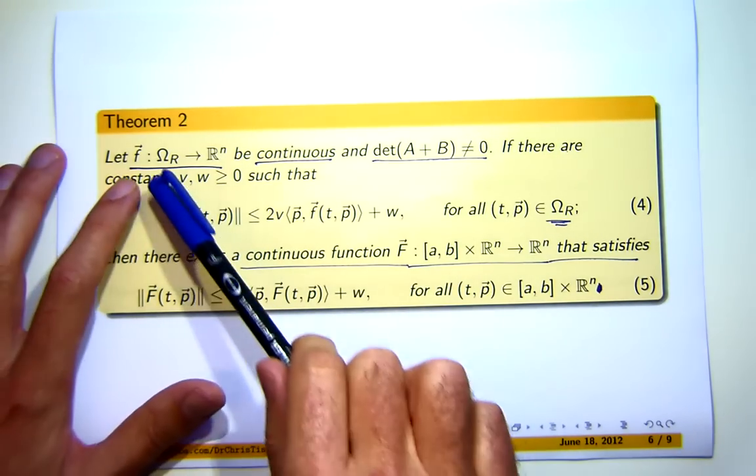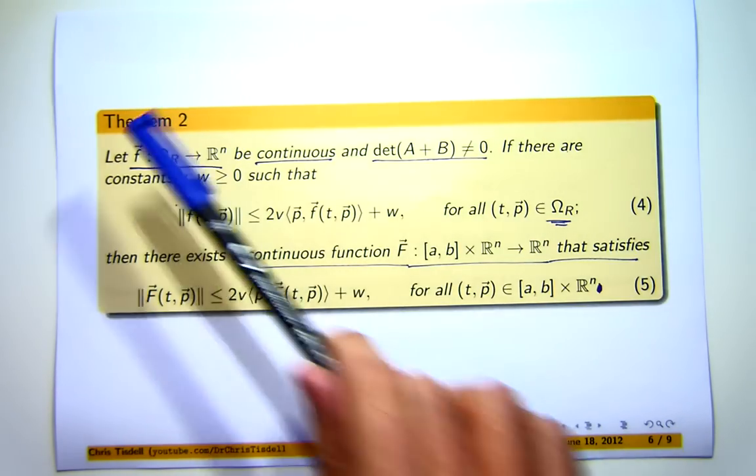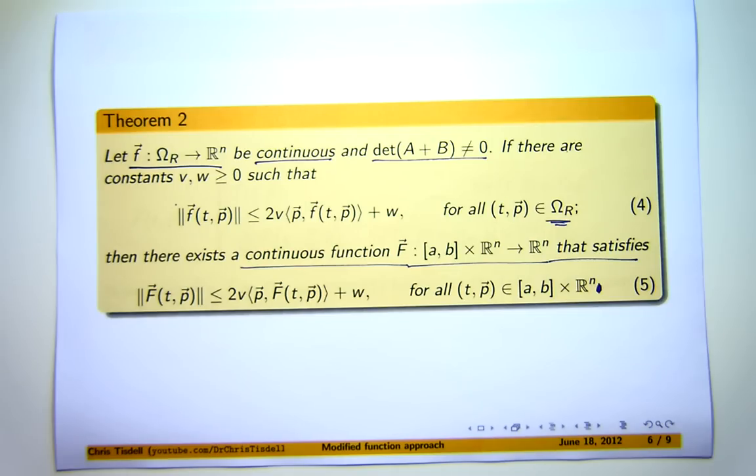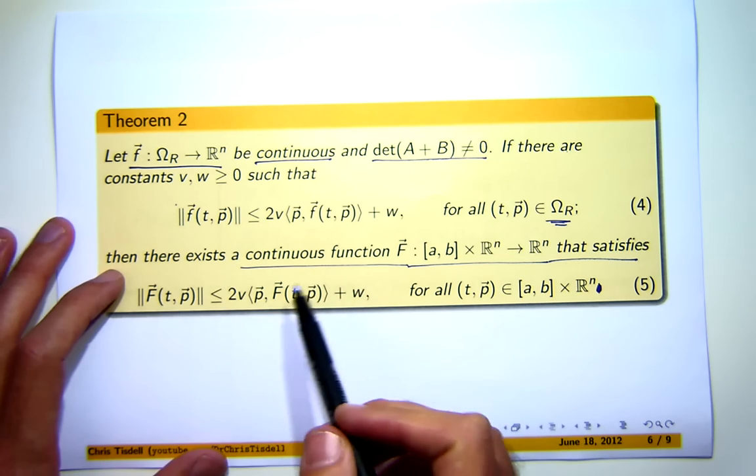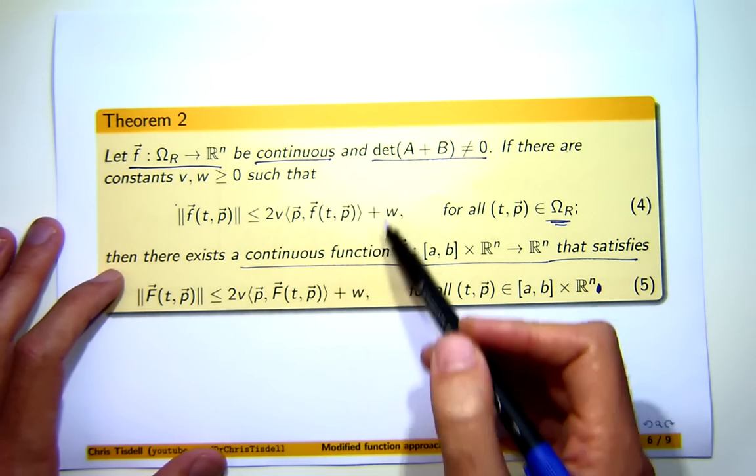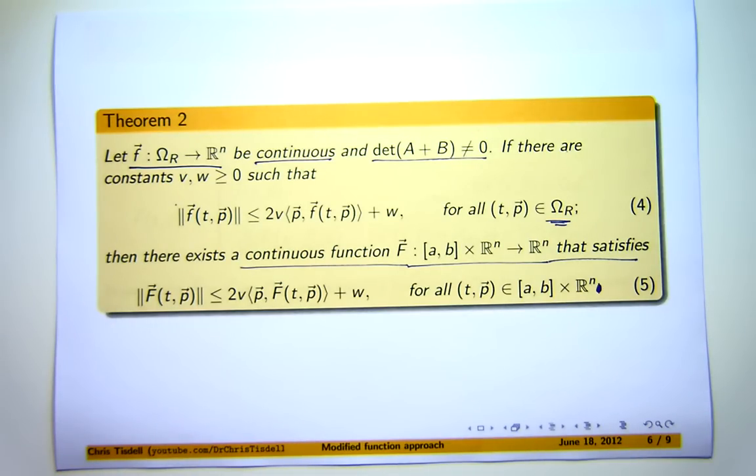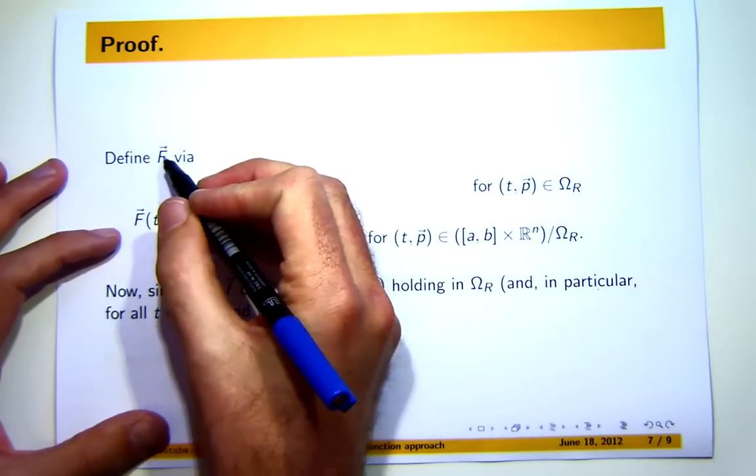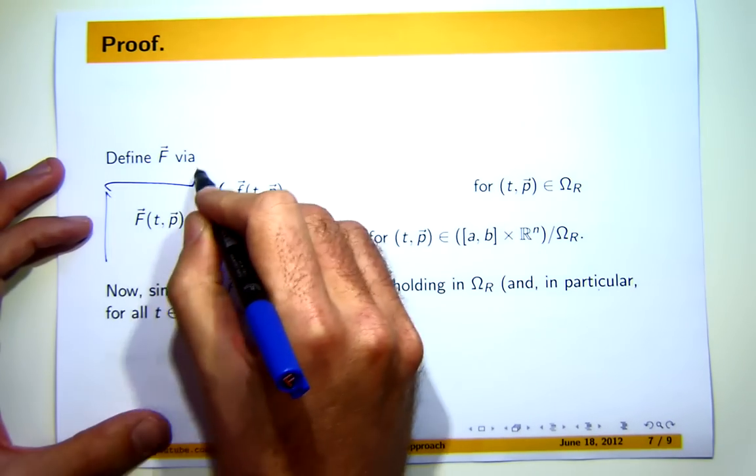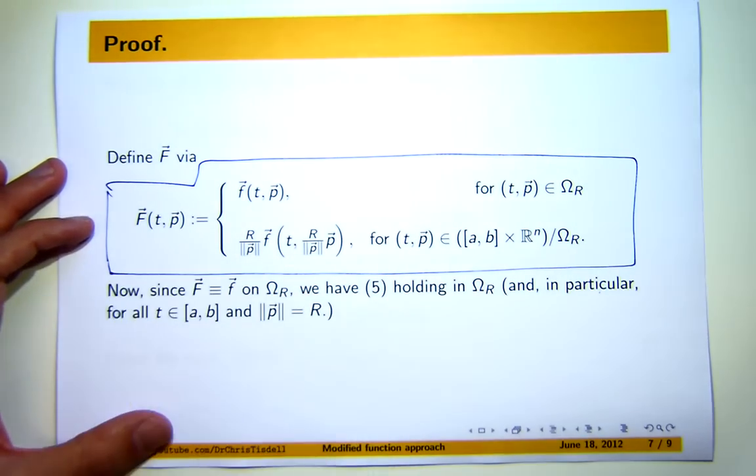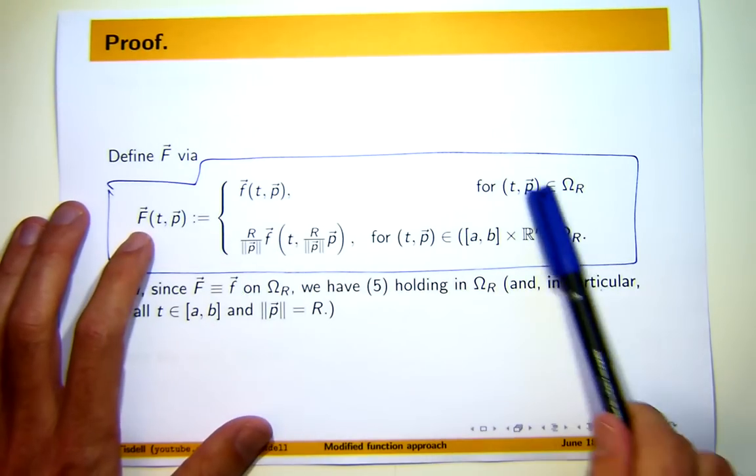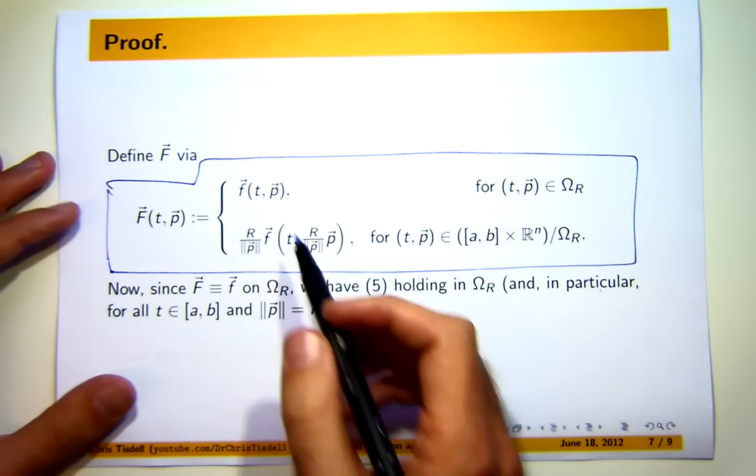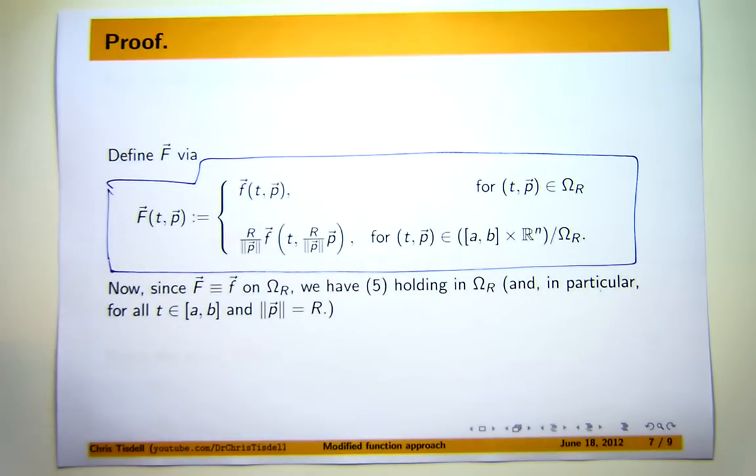So, in other words, what we're going to do is extend or modify this f and extend its domain to the whole of this set such that that extension is continuous and that that extension satisfies this kind of inequality for the same constants v and w. So, how do we do it? Well, let me show you. We'll discuss the proof. I'm going to define my big F by the following. Well, big F and little f are identically equal on omega sub R. And outside of omega sub R, I'm going to define my big F to be the following.